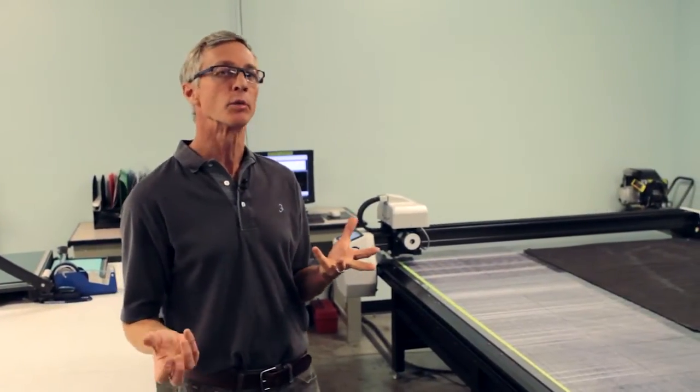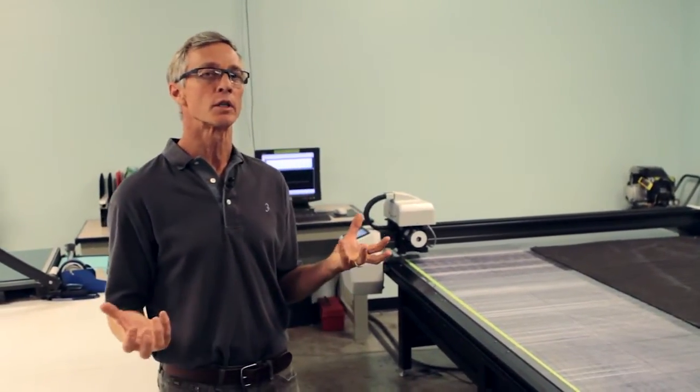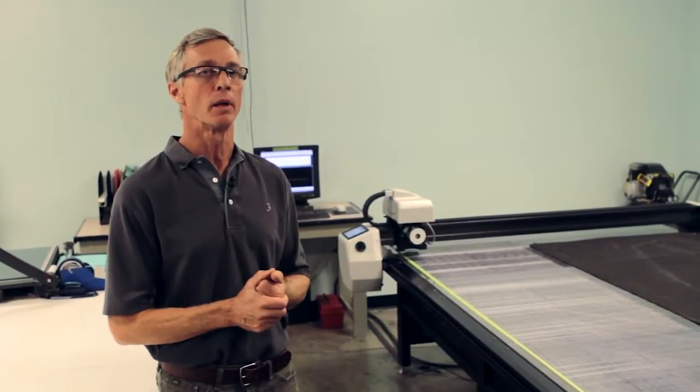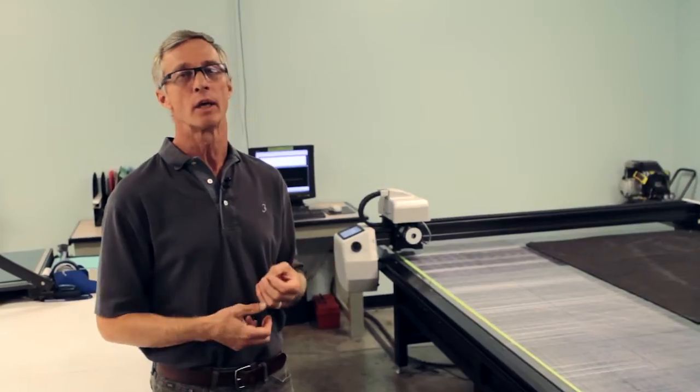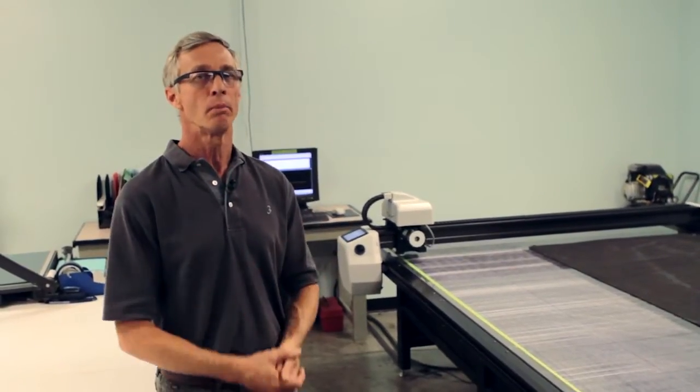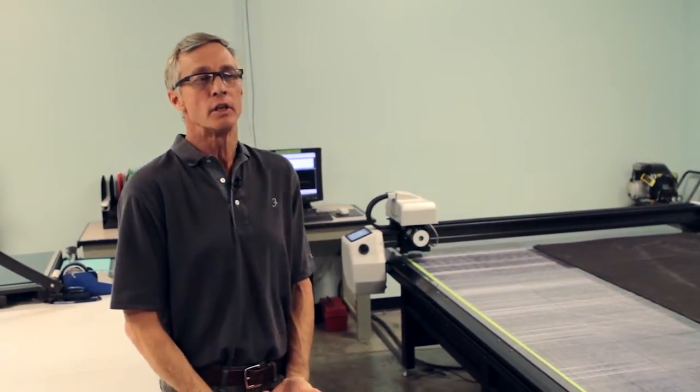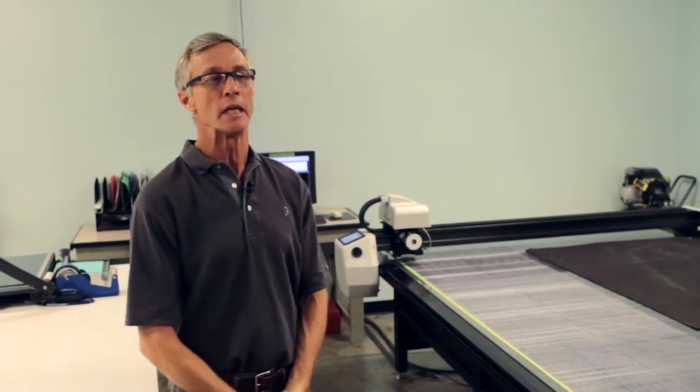The autometrics machine allows us to cut approximately 10 times faster than we did before. If we were to hand-cut a ply kit it might take us two hours, whereas in that same amount of time we can actually cut 10 or more ply kits for each of the products that we make. So the savings is substantial.